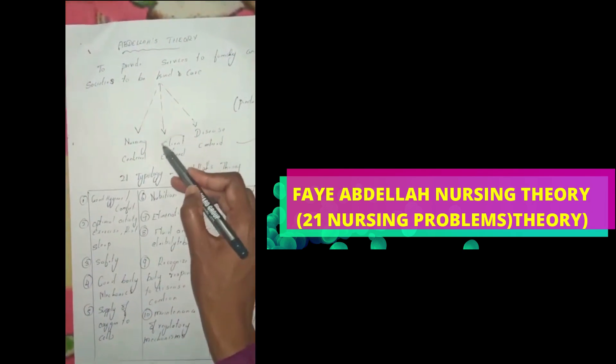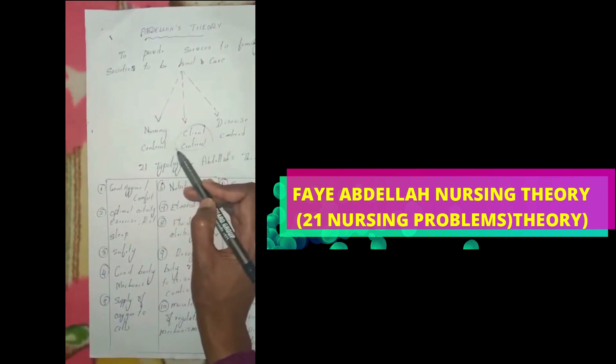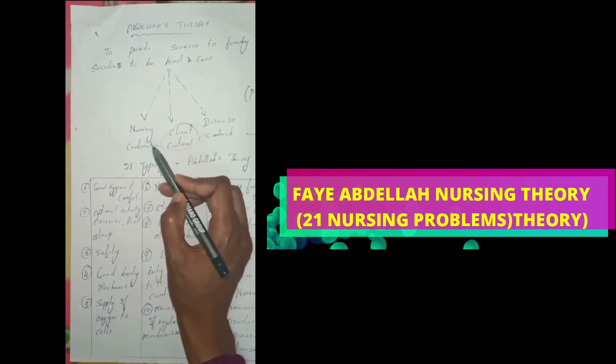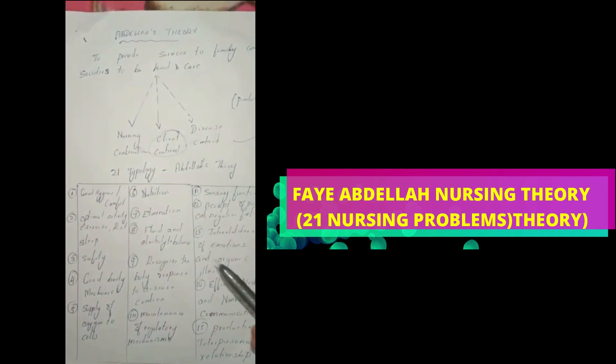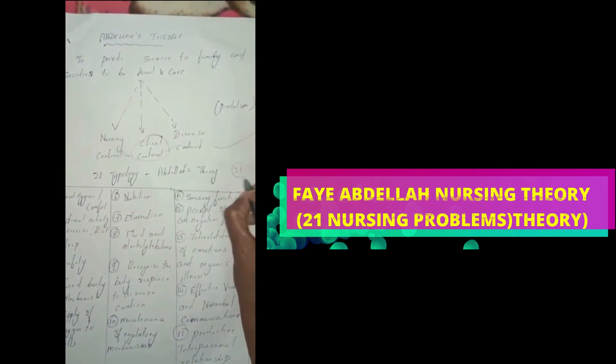This client center is in the middle because the nurse has to see what is the disease pattern and what is the nursing care we can keep. In Abdellah's theory, there is 21 typology. He stressed the person has to have 21 needs.